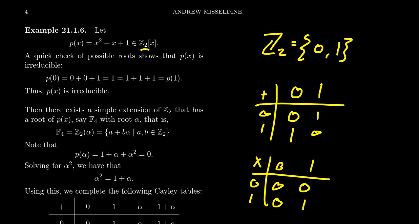From Z2 we can construct a field of order 4. To do that we need to find an irreducible polynomial over Z2. The polynomial x²+x+1 is an irreducible polynomial over Z2[x]. Since it's a quadratic — degree 2 — it will be irreducible if and only if it has no root.